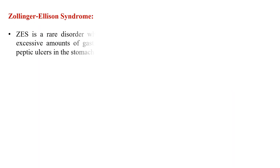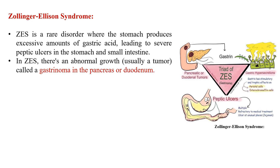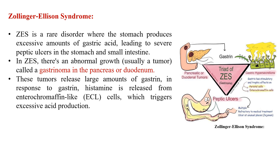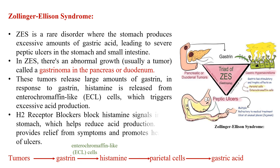Next, H2 blockers are used in Zollinger-Ellison syndrome — a rare disorder where the stomach produces an excessive amount of gastric acid, leading to severe peptic ulcers. In this syndrome there is an abnormal growth, usually a tumor called gastrinoma, in the pancreas or duodenum. These tumors release large amounts of gastrin, which acts on enterochromaffin-like cells to release histamine, which in turn triggers excessive acid production by parietal cells. These blockers inhibit the histamine signal, helping reduce acid production and promoting healing of ulcers.